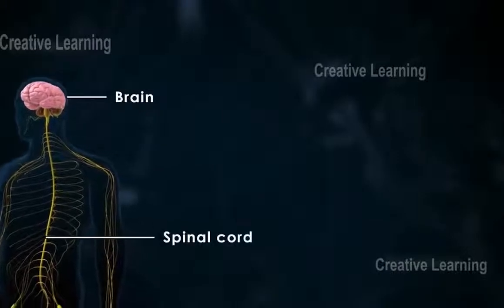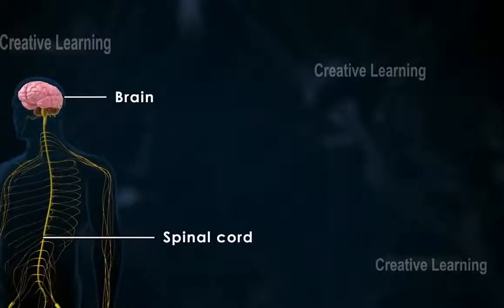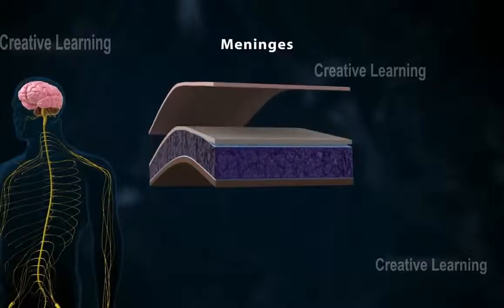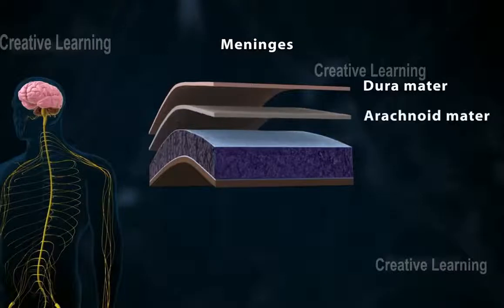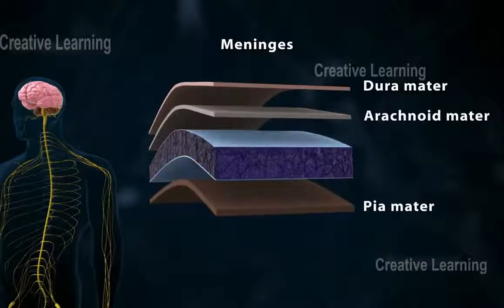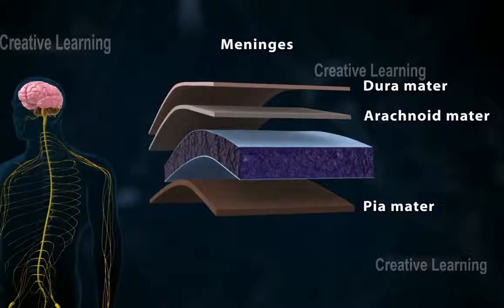Both are enclosed in protective layers called meninges. The outer layer is called the dura mater, the middle layer is called the arachnoid mater, and the inner layer is called the pia mater.